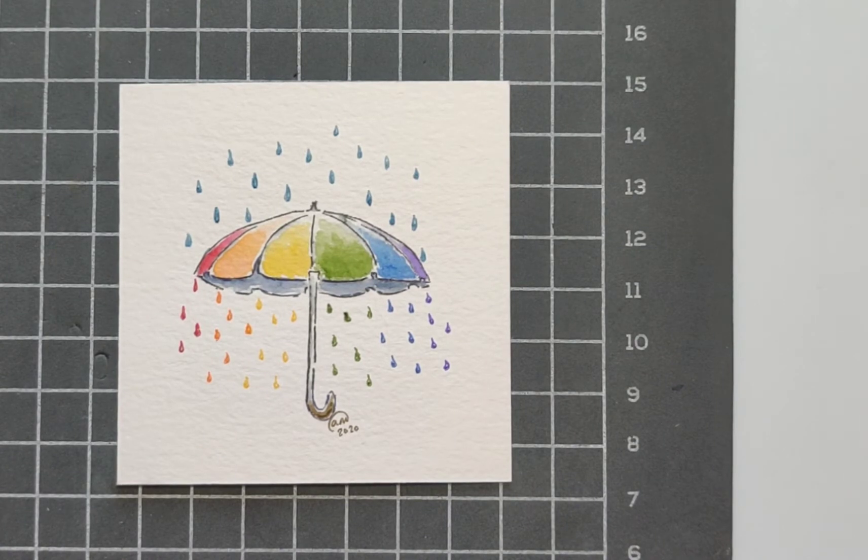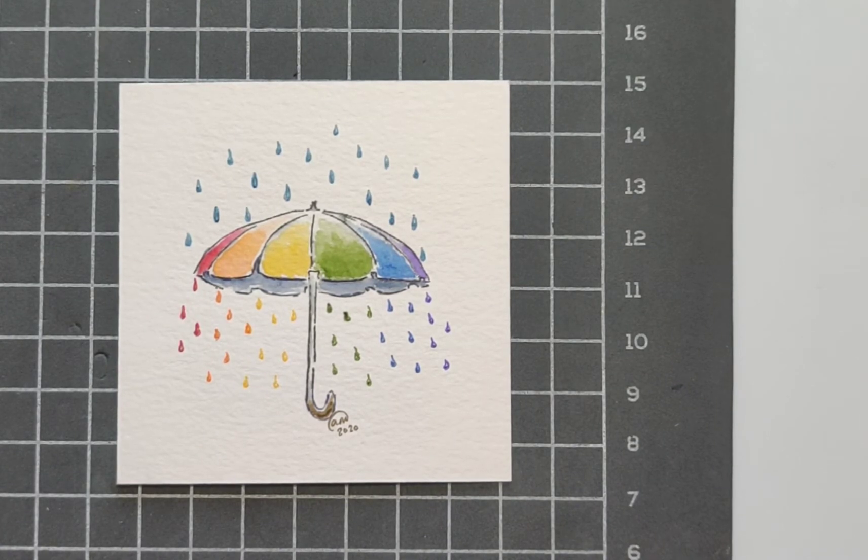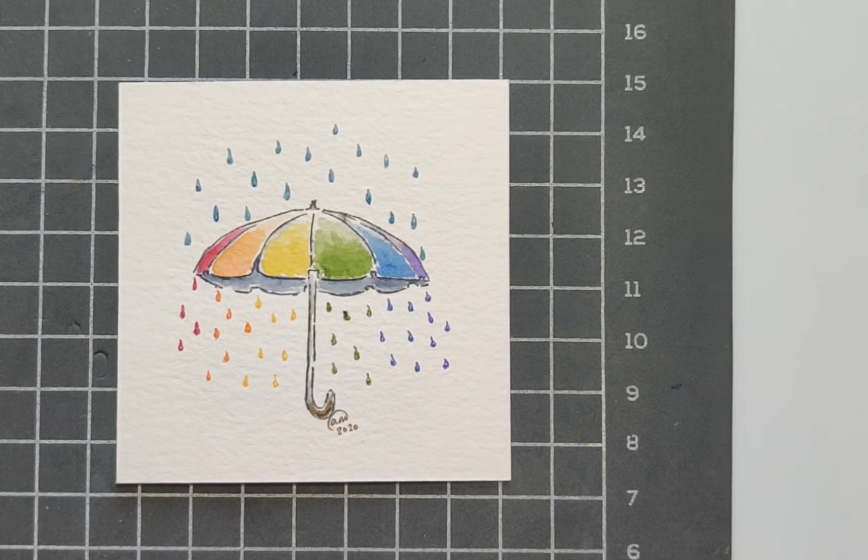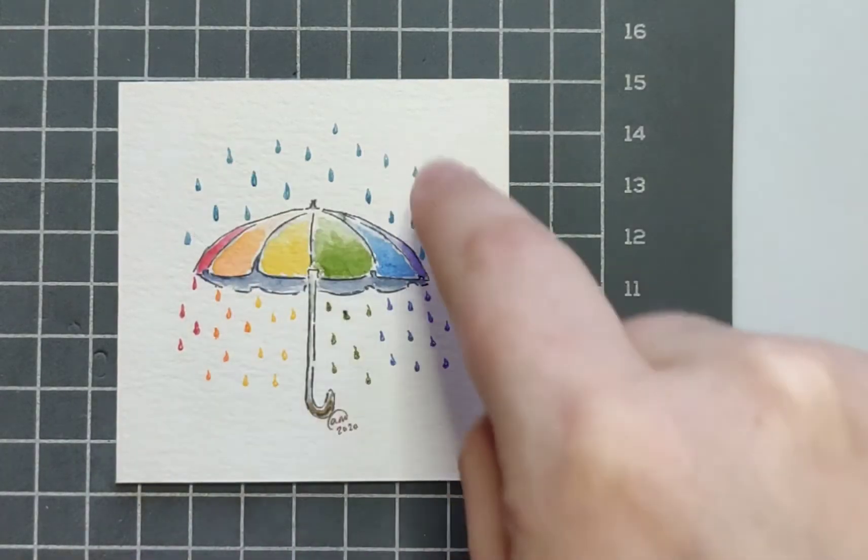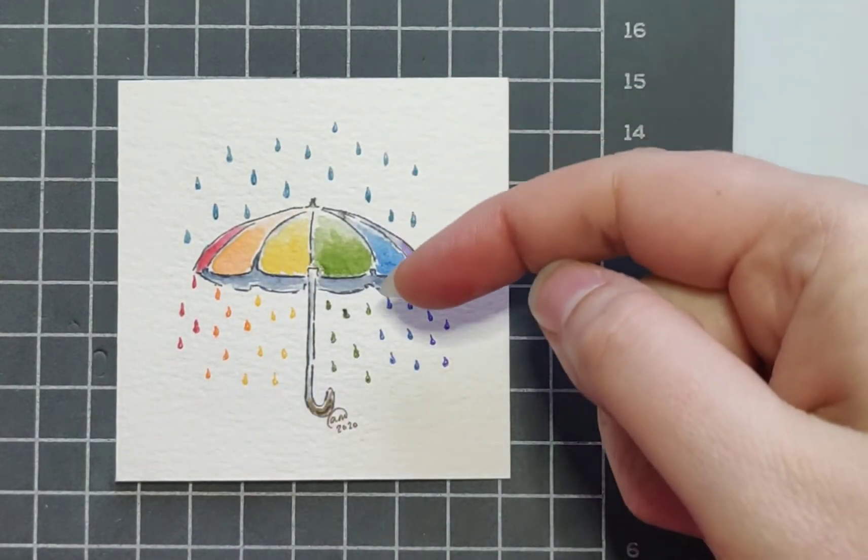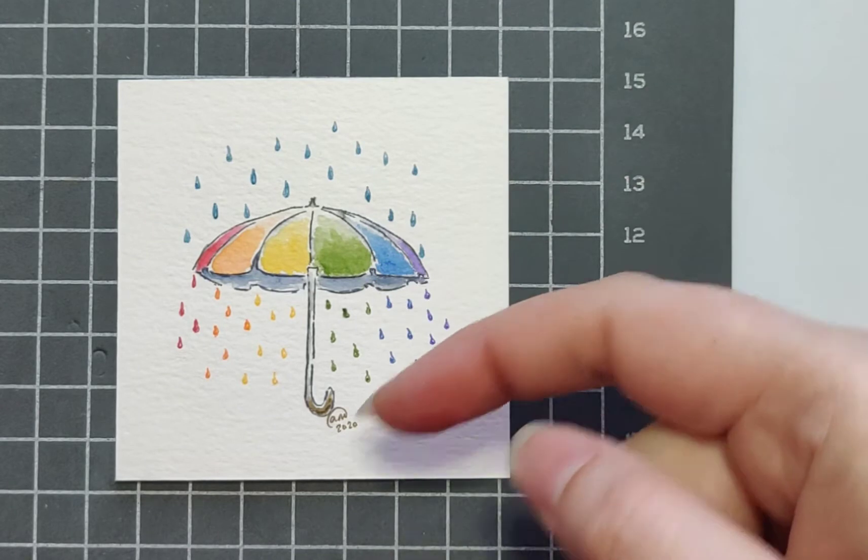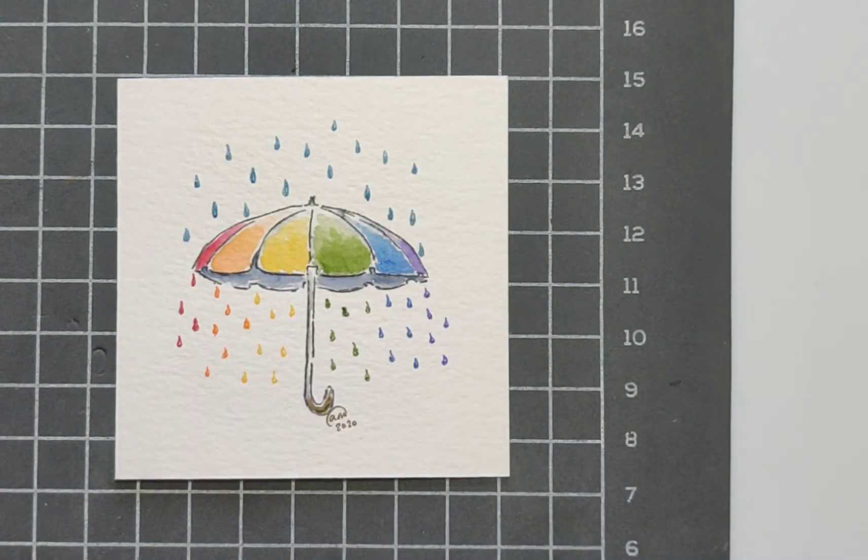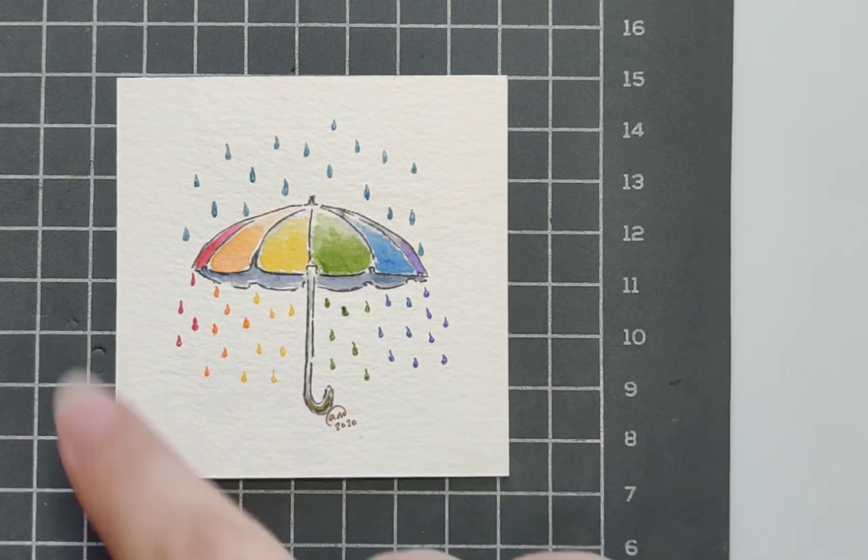Hi everyone and welcome to another Watercolor Wednesday. I am Allison from the blog Glimpse Inside, and today I have this super cute rainbow umbrella with different rainbow raindrops. As the rain falls with normal drops, it changes to the colors of the rainbow.